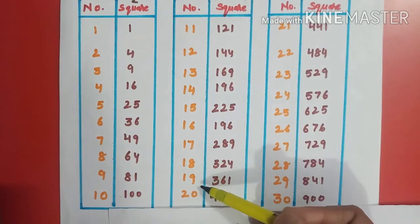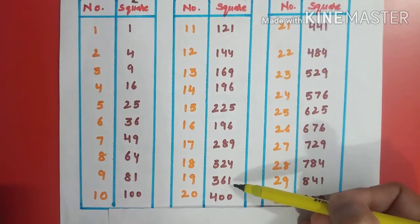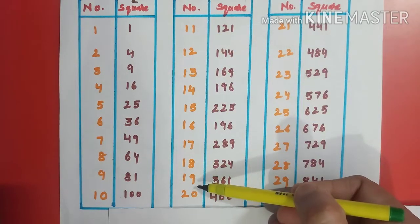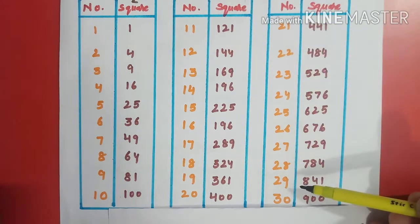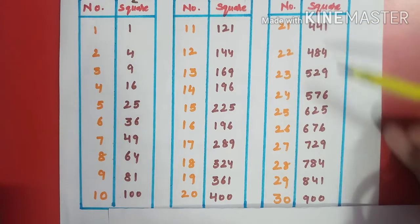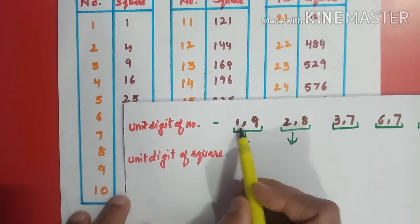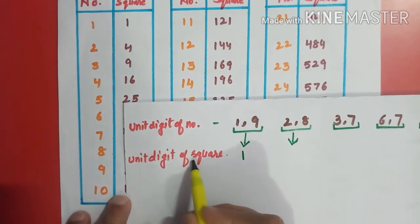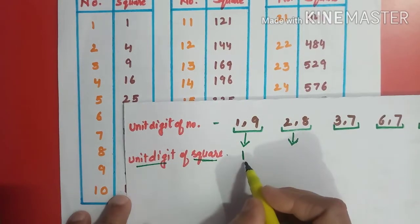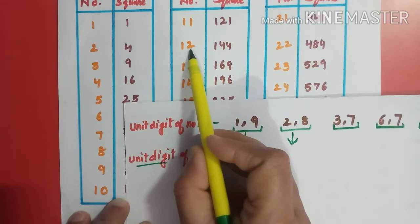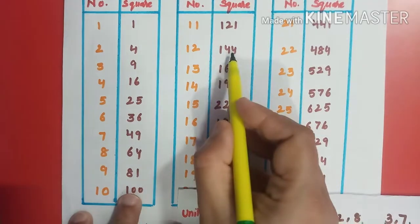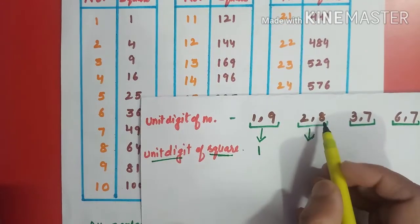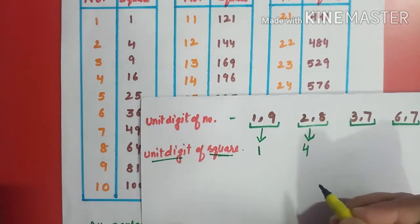Now let's see some more properties of square numbers. If any number ends in 1 or 9, its square always ends in 1 only. For example, if a number's unit digit is 1 or 9, the unit digit of its square will always be 1. Similarly, if any number ends in 2 or 8, the square ends in 4.